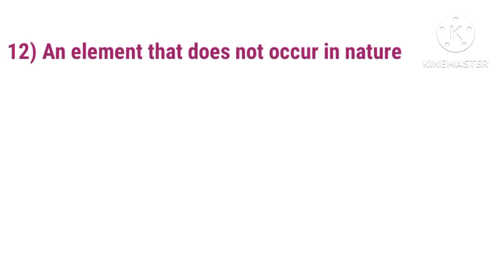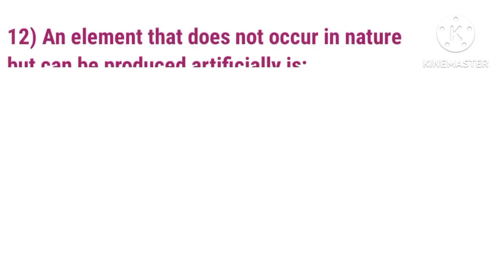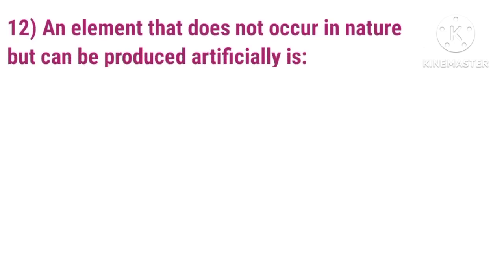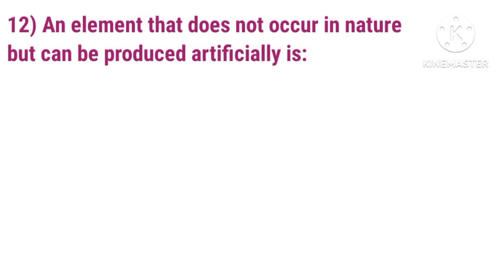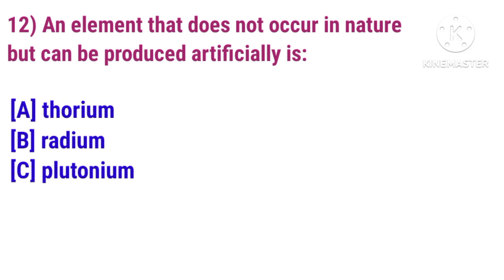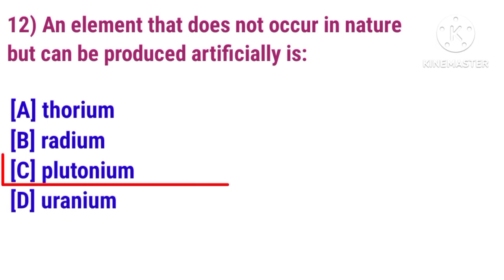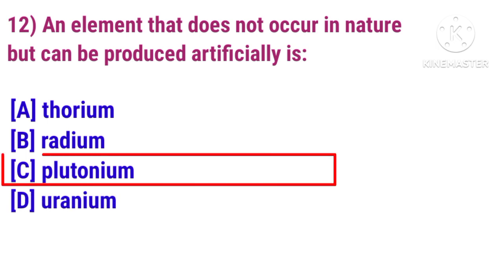Question 12: An element that does not occur in nature but can be produced artificially is? Answer is Plutonium.